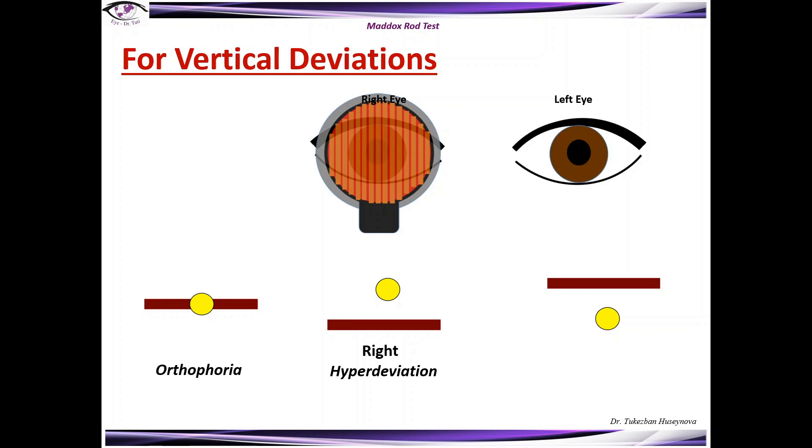And in case if the light is below the red line this is the right hypodeviation in relation to the left eye.